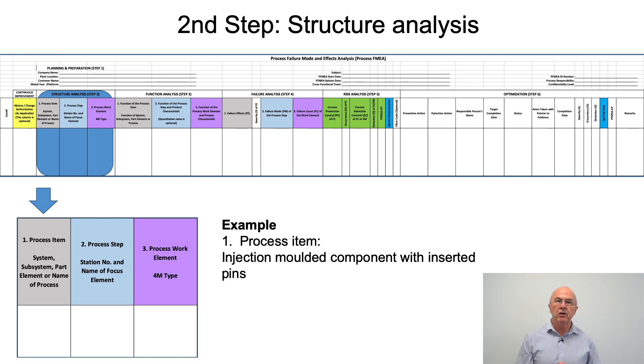Now let's have a look at the second step structure analysis within the framework of the format to record the FMEA results. In this case we have three parts of the form to complete: the process item, the process step, and the process work element. Focusing on the case study, the process item would be the finished injection molded component with the inserted pins.